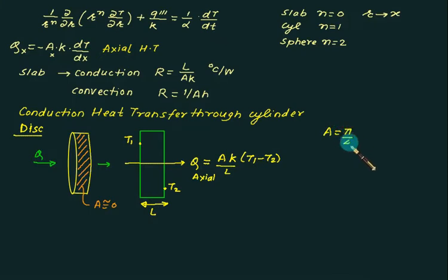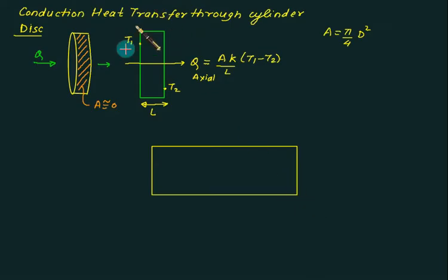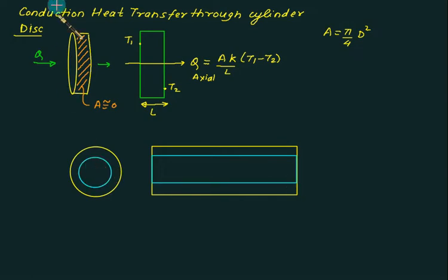Now consider a case of hollow cylinder with inside wall and outside wall. Right now we are solving the problem for hollow cylinder, not solid cylinder. Assume the entire cylindrical inner surface is maintained at uniform temperature and the outside circumferential surface is at temperature T2.